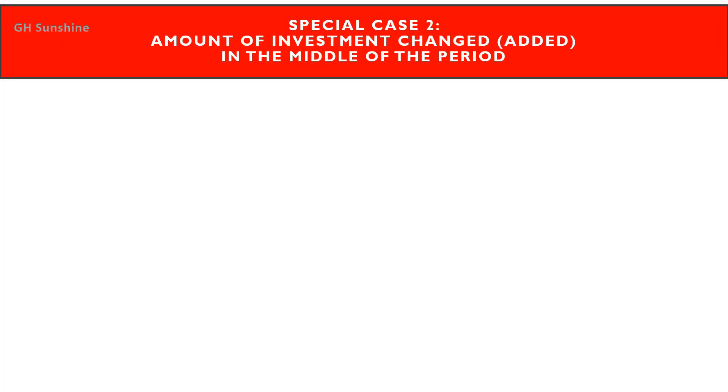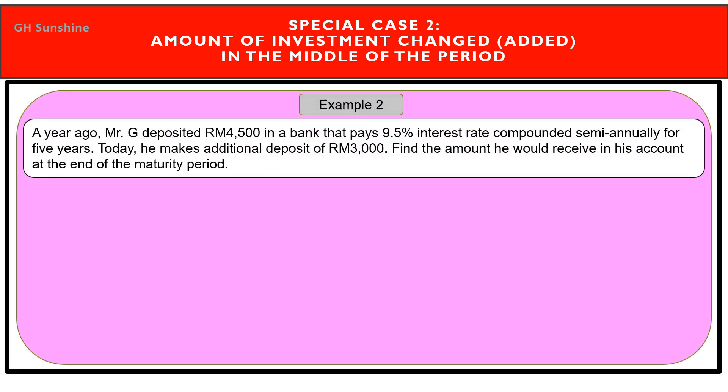Now we proceed to the second special case: the amount of investment changes in the middle of the period. We look at when investment is added mid-period. A year ago, Mr. G deposited RM4,500 in a bank that pays 9.5% interest compounded semi-annually for 5 years. Today he makes an additional deposit of RM3,000. Find the amount he would receive at the end of the investment period.